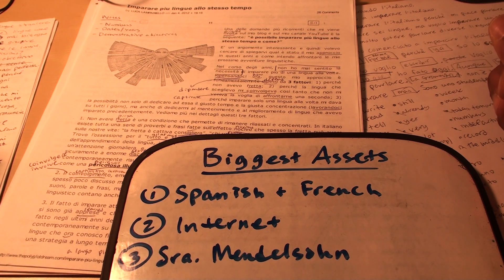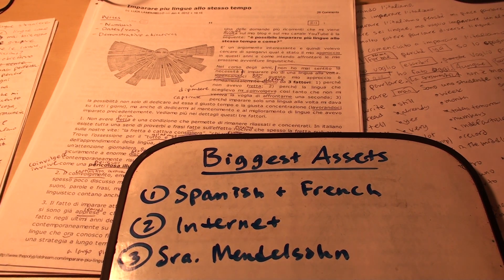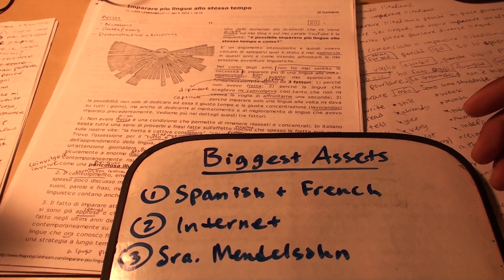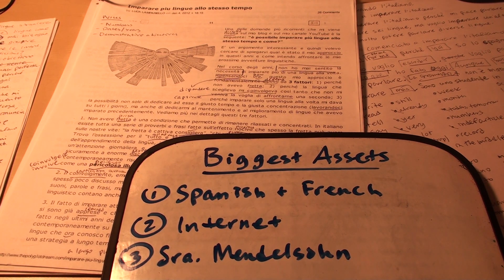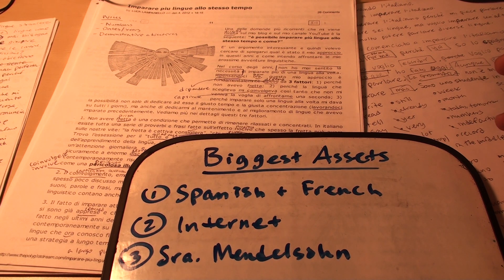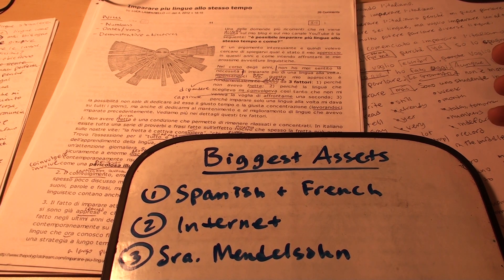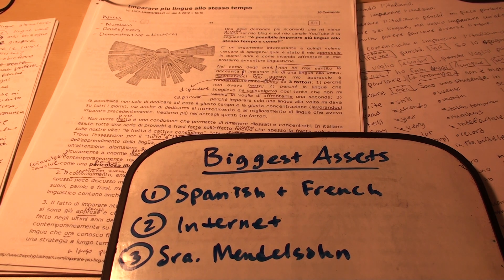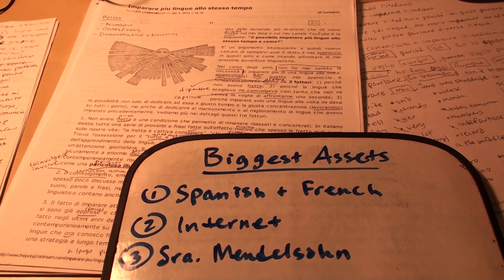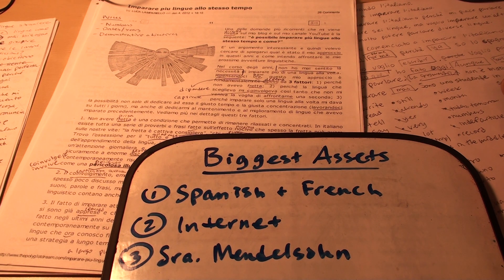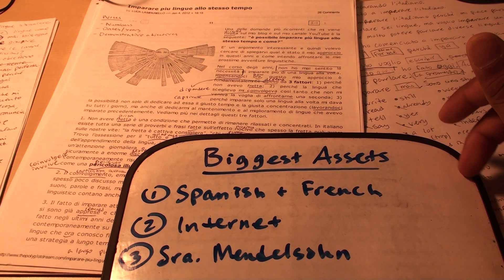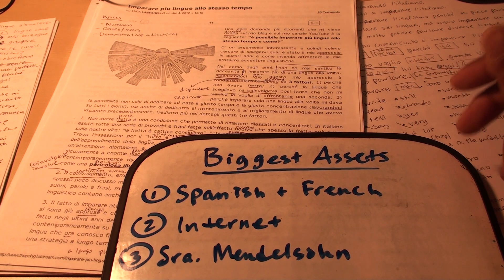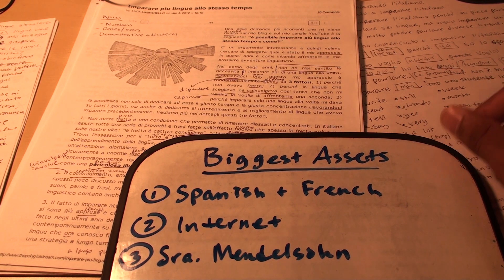Also, vocabulary, there are so many cognates between Spanish and Italian and French and Italian and also English and Italian. So maybe I should even put English on this biggest assets list. But there are just so many cognates that my reading comprehension probably right now is definitely above 50%, definitely probably above 65% even. So the grammar is almost identical between these three besides a few exceptions. But in general, the grammar concepts are the same.